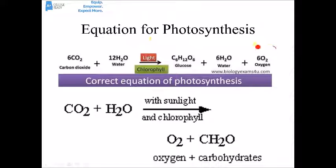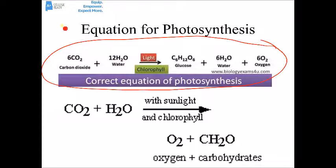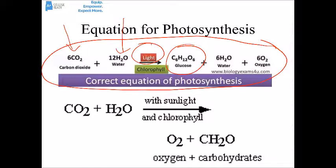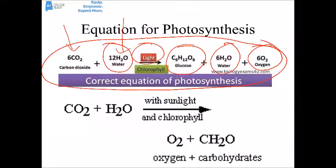Here's the balanced equation for photosynthesis. The reactants are carbon dioxide, taken in from the air through the stomata or stomates; water taken in from the ground through the roots; and light absorbed by the pigment proteins. The products are glucose and oxygen gas. We normally cancel out the water on both sides, leaving 6H2O on the reactant side.